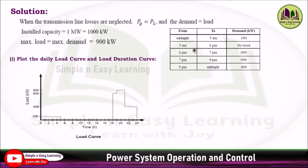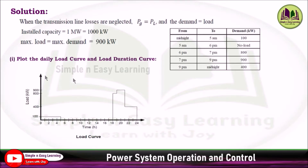Then 5 a.m. to 6 p.m. there is no load. 6 p.m. to 7 p.m., one hour, 800 kilowatt. Then 7 to 9 p.m. it is 900 kilowatt. Then 9 p.m. to midnight it is 400 kilowatt. This is how you need to plot the load curve.